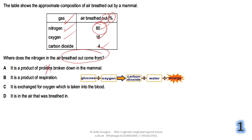Option B says it is a product of respiration. Look at this equation representing aerobic respiration: glucose and oxygen react to give carbon dioxide, water, and energy. No nitrogen is released due to aerobic respiration inside our cells, so this is also wrong.